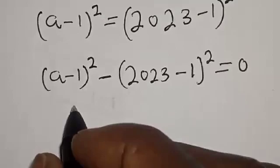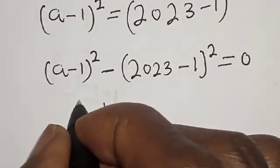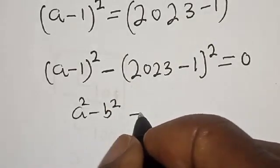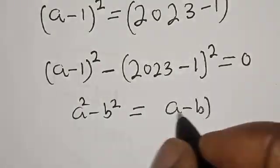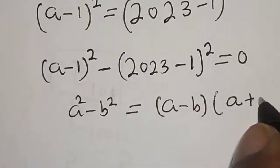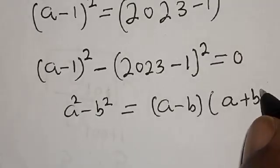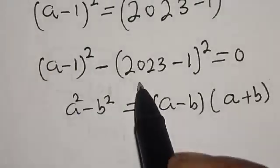Recall that if you have a² - b², this is equal to (a-b) multiplied by (a+b). In this case, our a is (a-1) and our b is (2023-1).